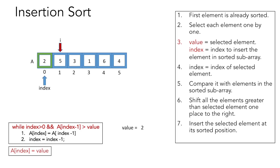We have successfully inserted 2 in the sorted sub-array. Incrementing i by 1, we move to element 3. We set index to i and store 3 in value. The element at index-1 is 5, which is greater than 3, so we shift 5 right and decrement index. Now the element at index-1 is 2, which is less than 3, so the while loop ends and we insert 3 at index.